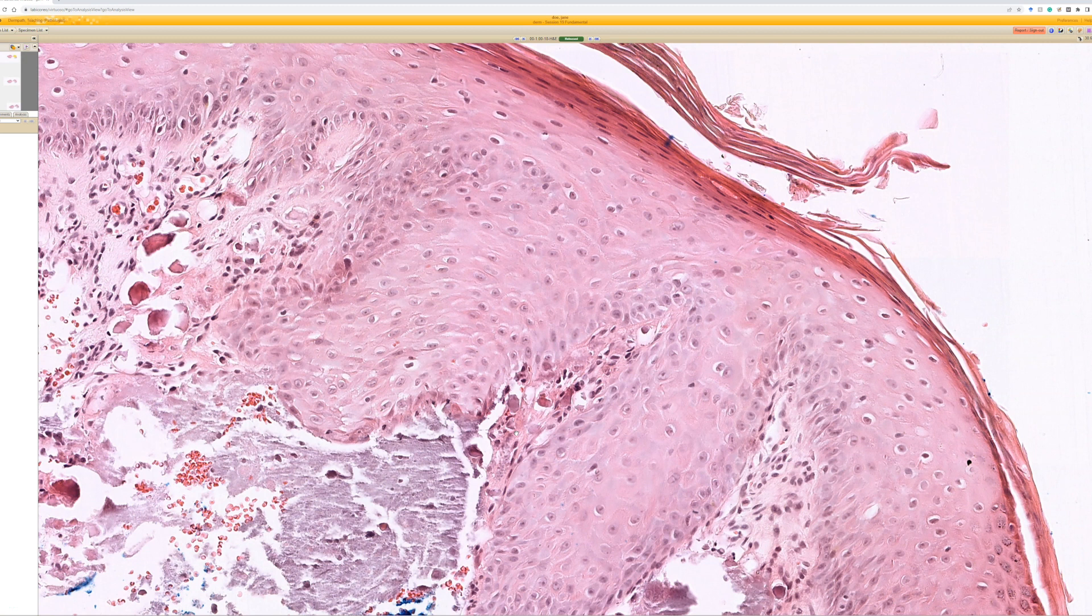For some reason, this looks just like calcinosis cutis, but when it occurs in that special location right under the epidermis around the eye in kids, it's called the subepidermal calcified nodule.